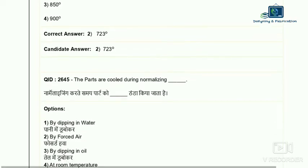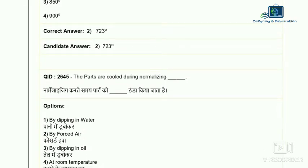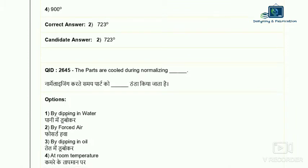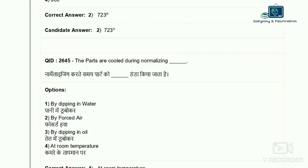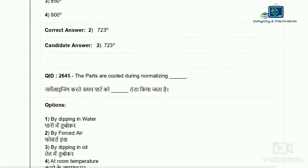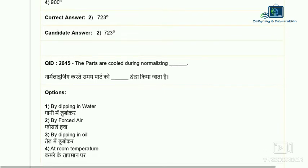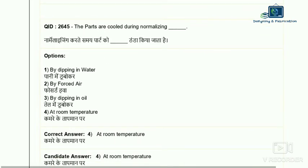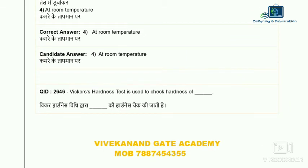Question 45: how are parts cooled during normalizing? Options are: dipping in water, by force air, by dipping in oil, or at room temperature. In normalizing, parts are cooled at room temperature. The process reduces residual stresses and improves mechanical strength. So the correct answer is at room temperature — option four.